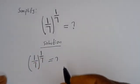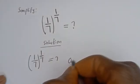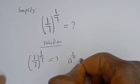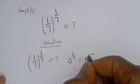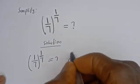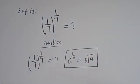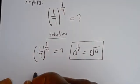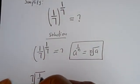Take note of this: if you have a to the power of 1 over n, this is equal to the nth root of a. Then this can be written as the 7th root of 1 divided by 7.